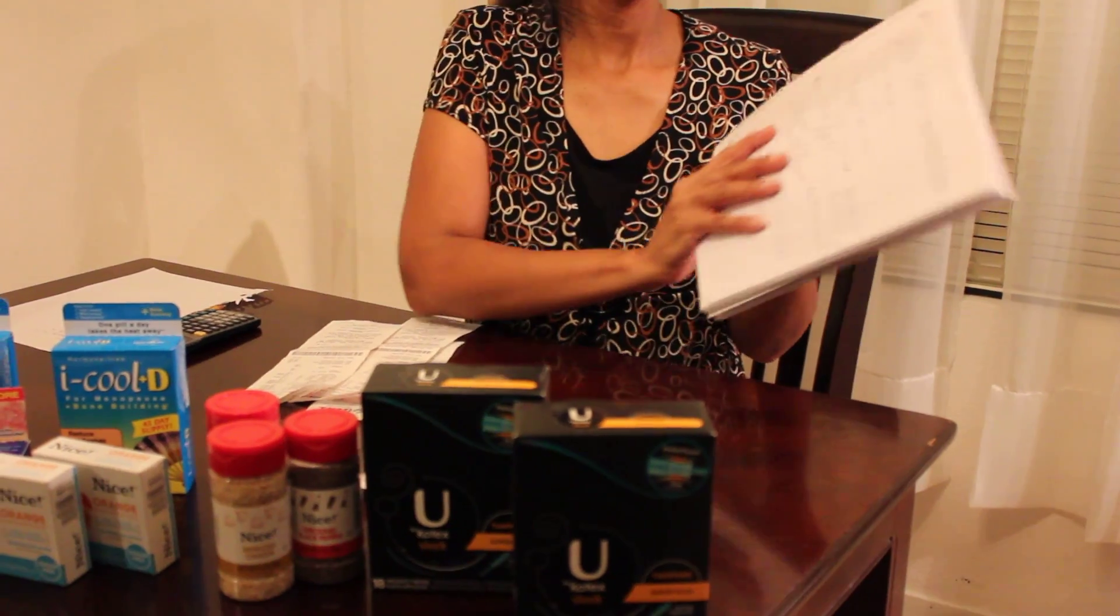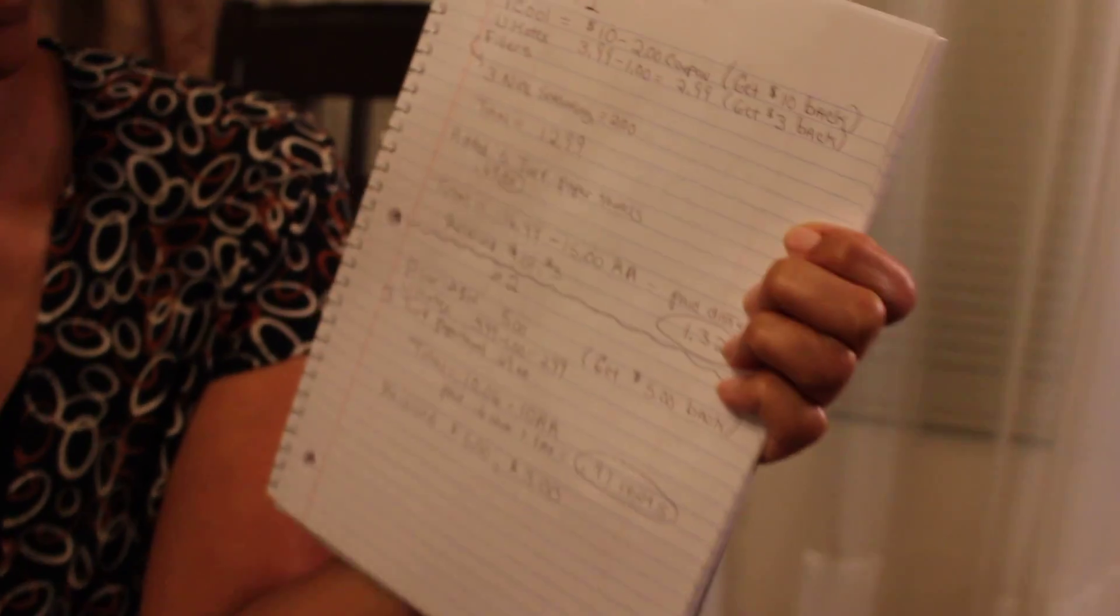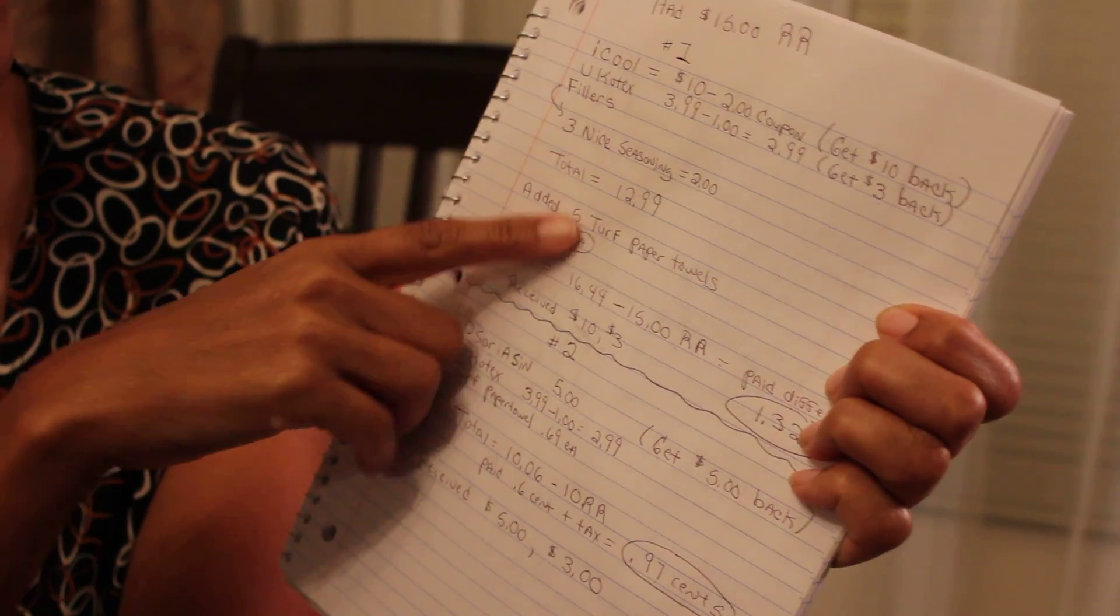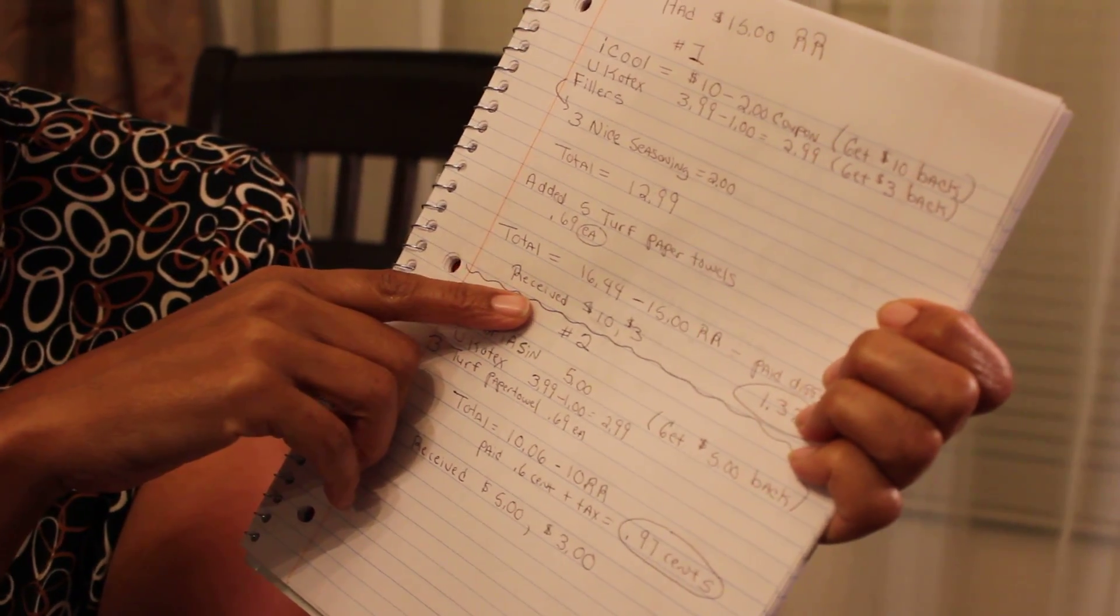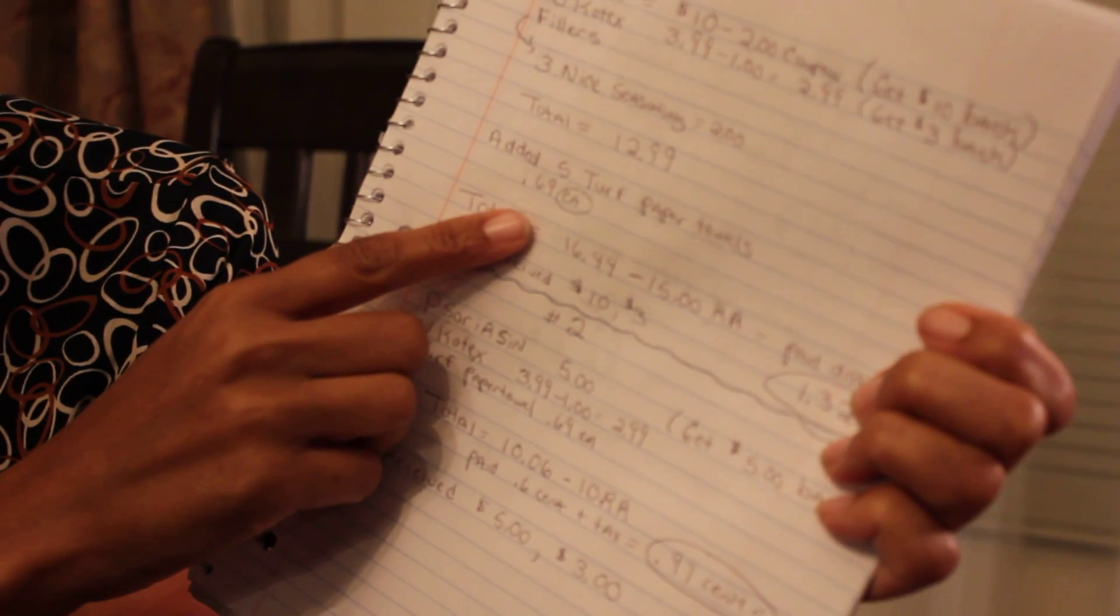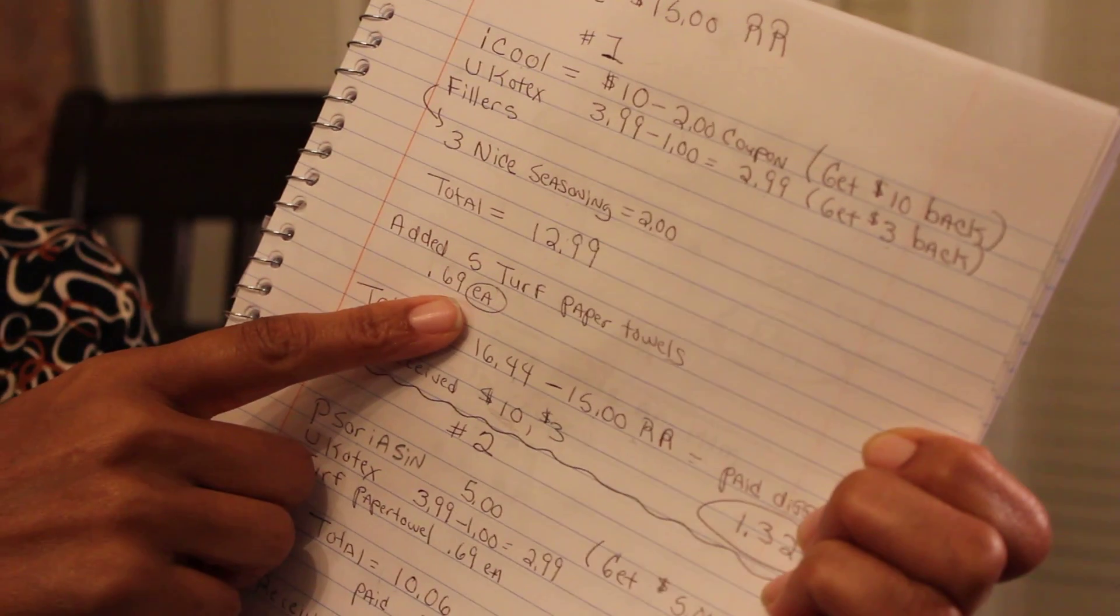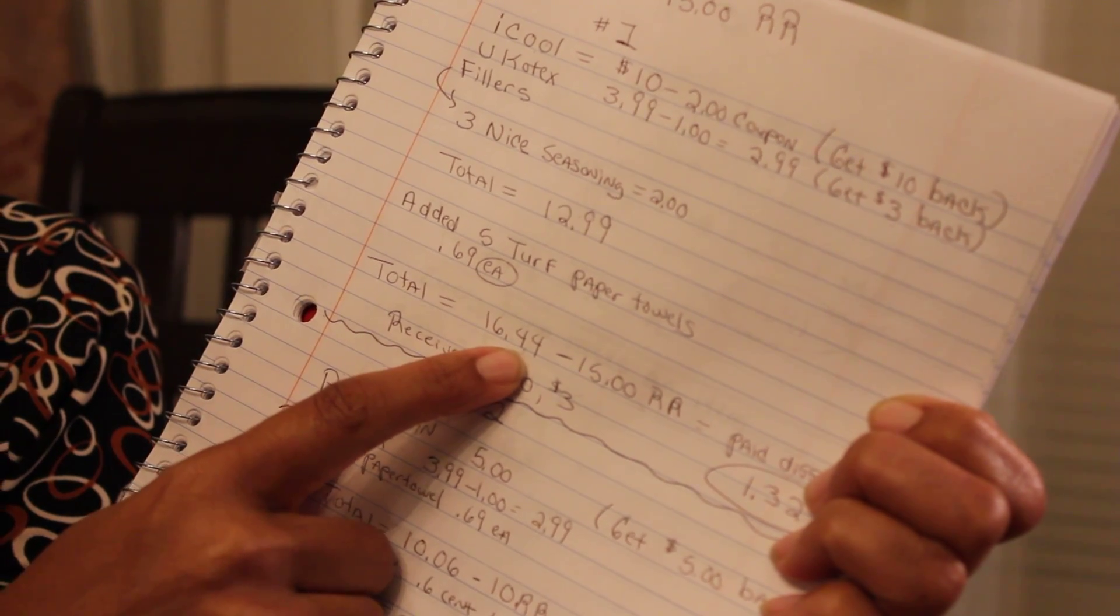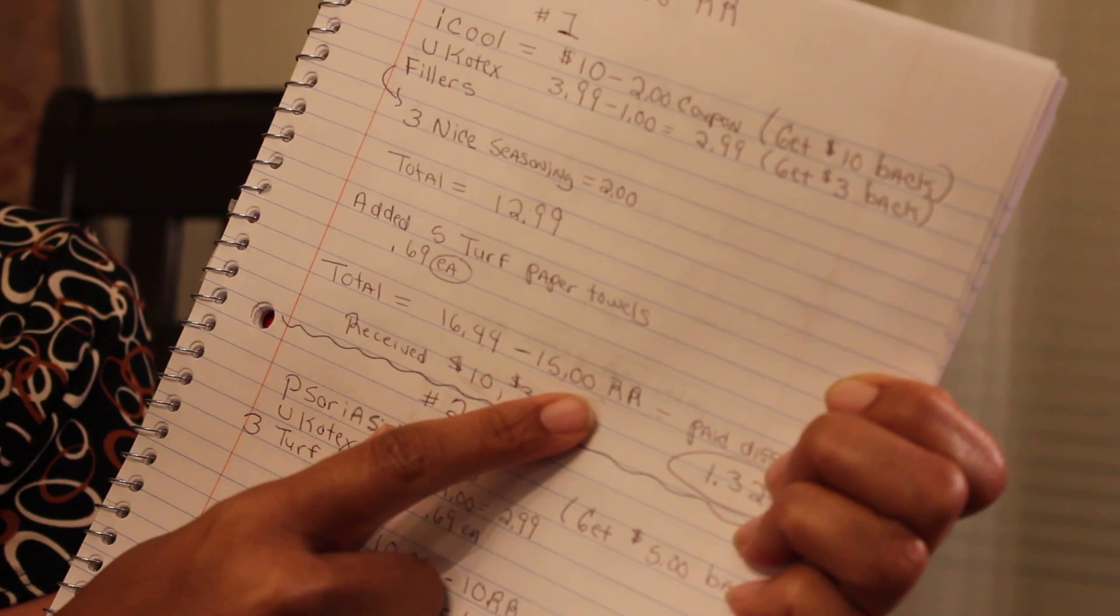As you can see here, my first transaction I did the iKool and also the U by Kotex. That came to, and I did a couple fillers, that came to $12.99. I had to add some more products, the paper towels, because I didn't have enough items. When I added these it brought my total to $16.44 before taxes.